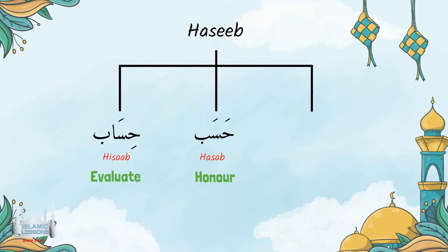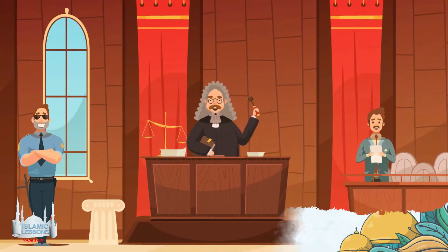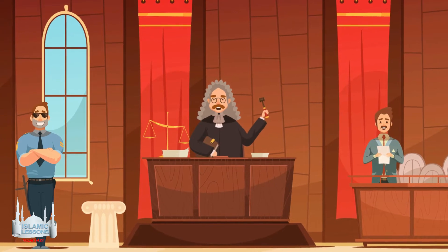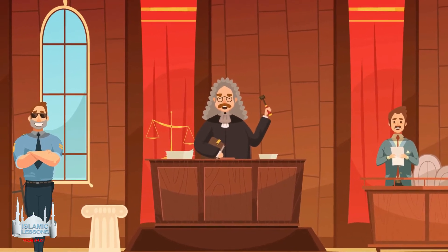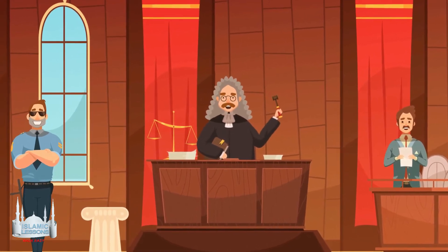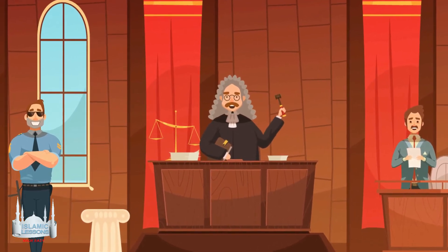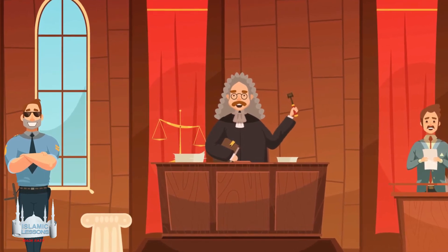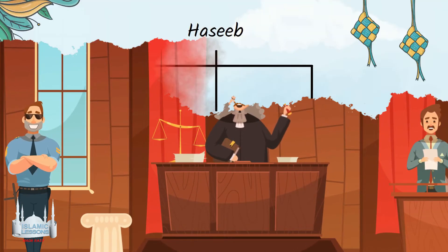And hasib can also be derived from the word hasp. Hasp means sufficiency, meaning enough. For example, a judge sees the evidence of a person who committed a crime. After examining the evidence, he says this evidence is sufficient, or the evidence is enough to sentence the person.